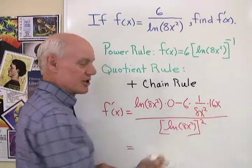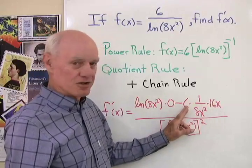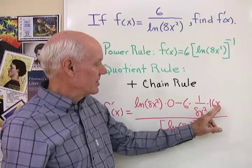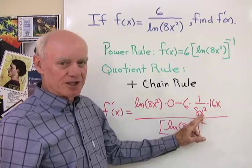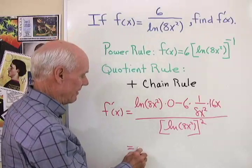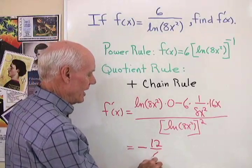Let's see, 8 divides into 16 twice, and then I'll have 2 times 6 is 12, and then x, that x will divide out with one of those x's right there. So it looks like I have negative 12 over x,